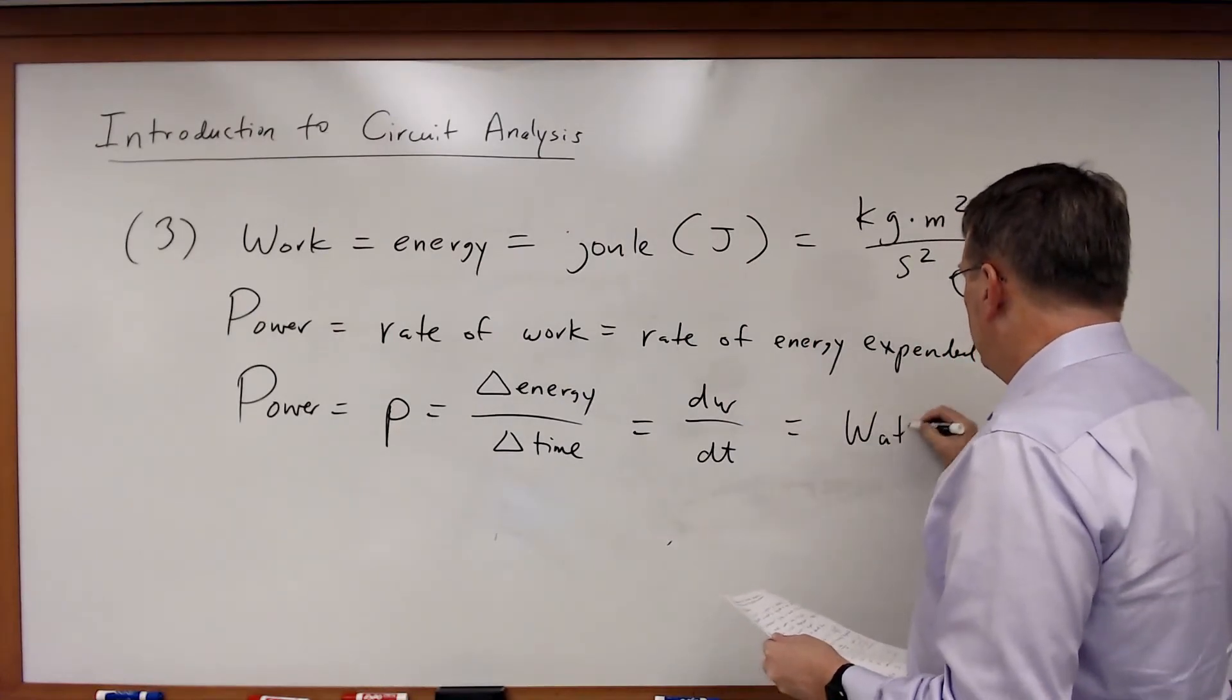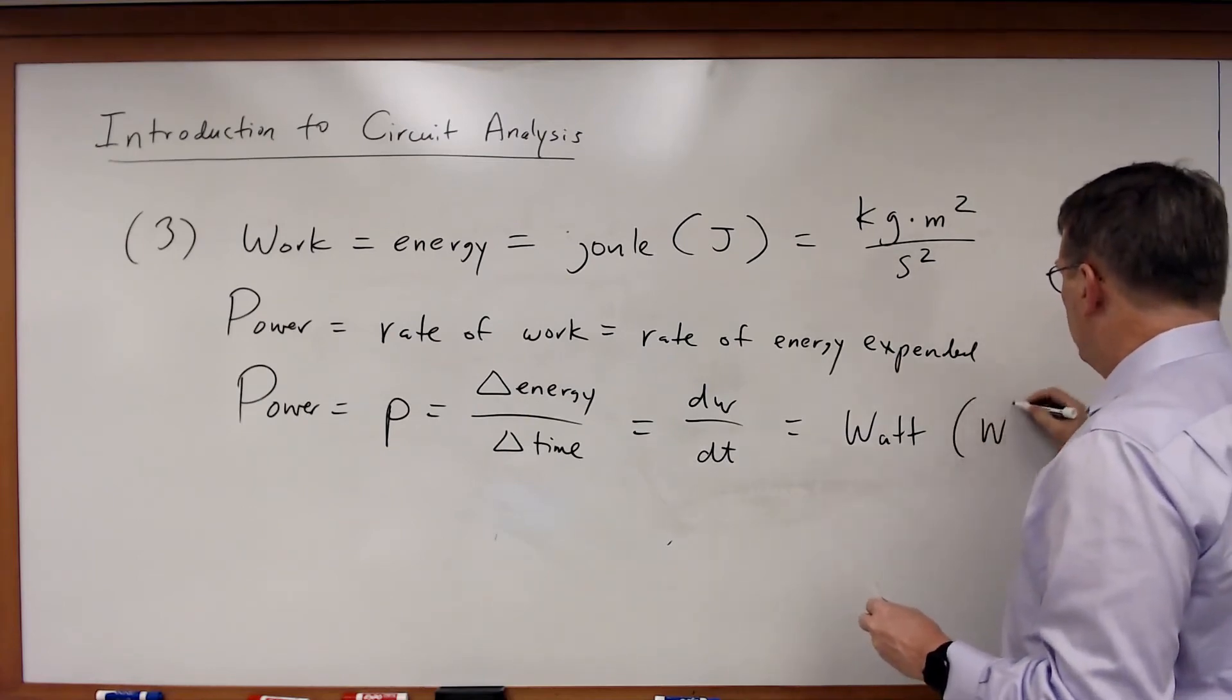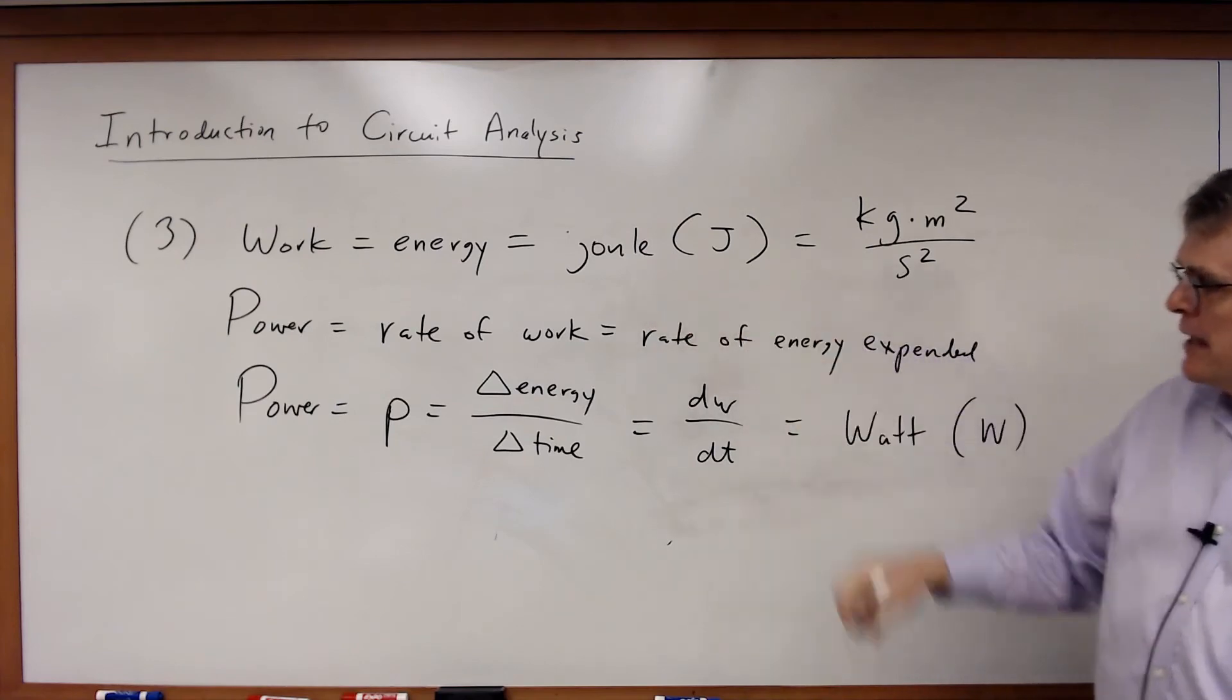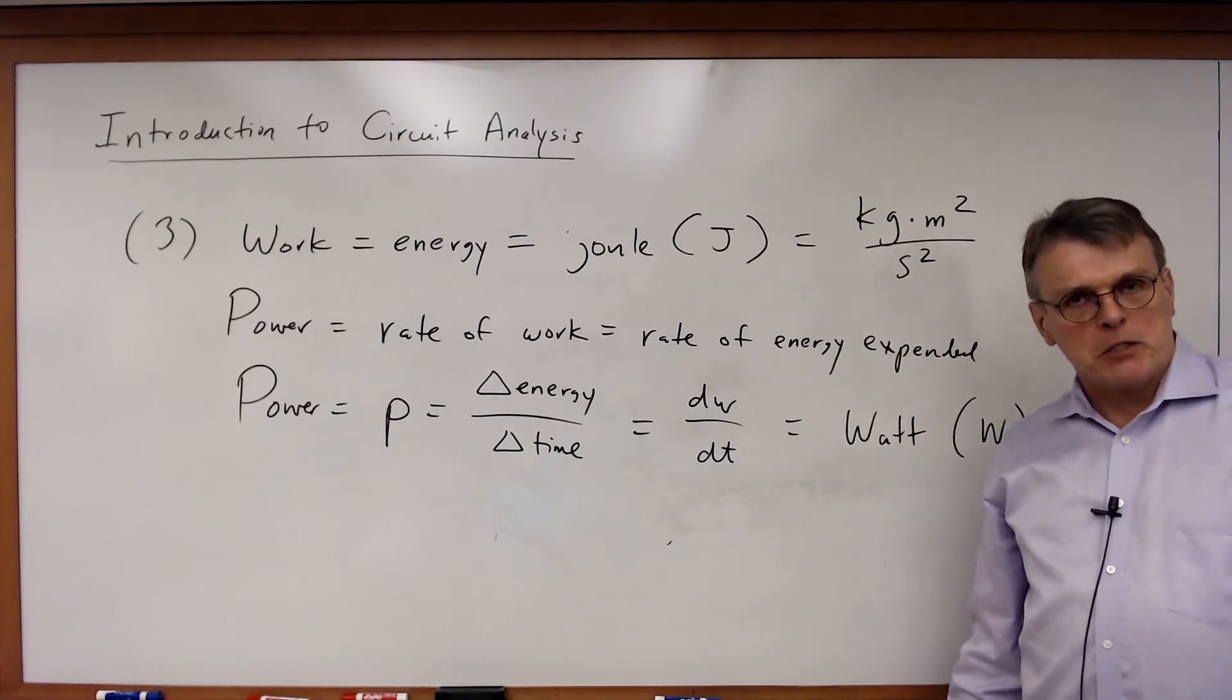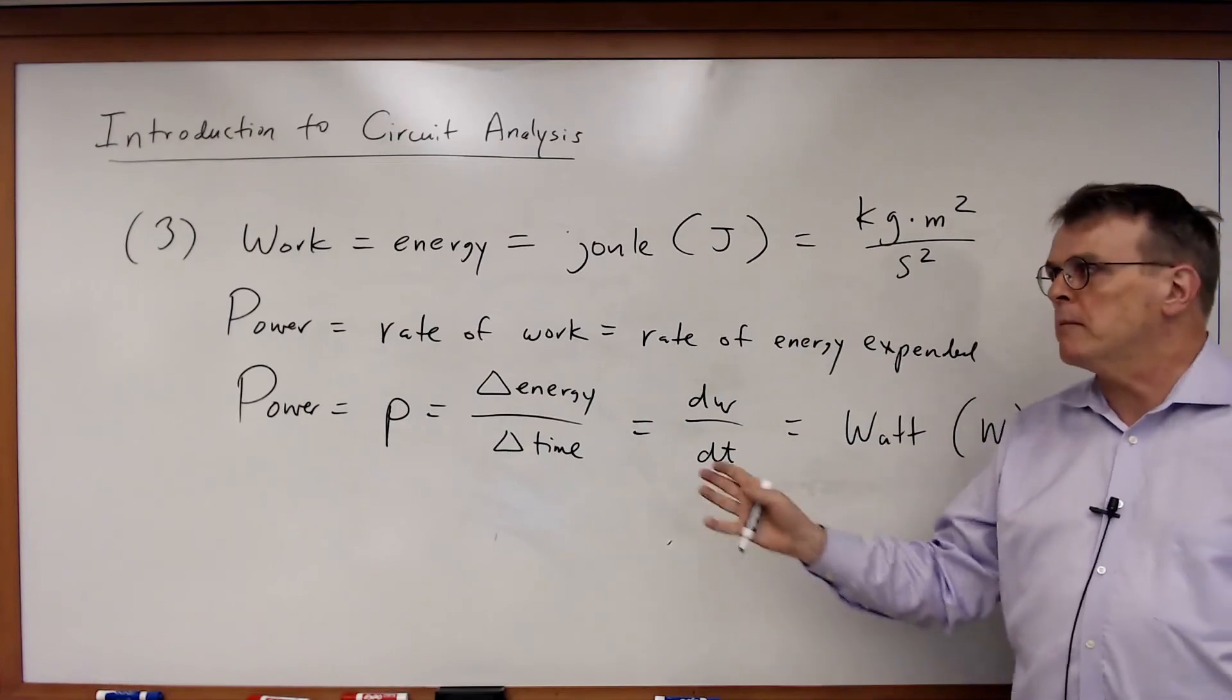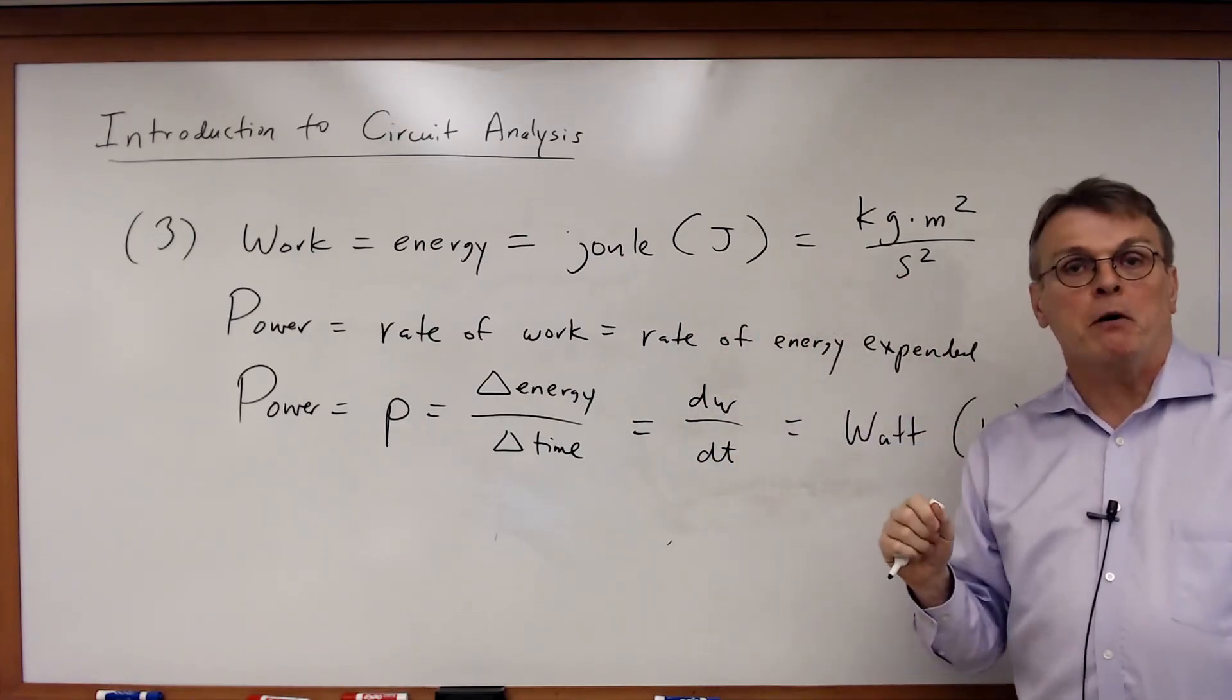The unit for power is watts, which we abbreviate as a capital W. And notice for joules, we abbreviate as a capital J. Once again, you have undoubtedly seen these units before in your physics courses. But, as we're going to see in circuits, we're going to be using these exact same units when we talk about how electric components work.